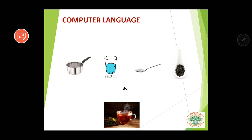What were the steps? First we took the saucepan, then we took water and put it in the saucepan, then we took sugar and put it in, then we mixed everything and boiled it. After boiling, we got the cup of tea. Here we are using certain steps to make tea. Similarly, for communicating with the computer we need to give it some instructions. The set of instructions which tells the computer what to do is known as a program. A program is a set of instructions which tells the computer what to do.